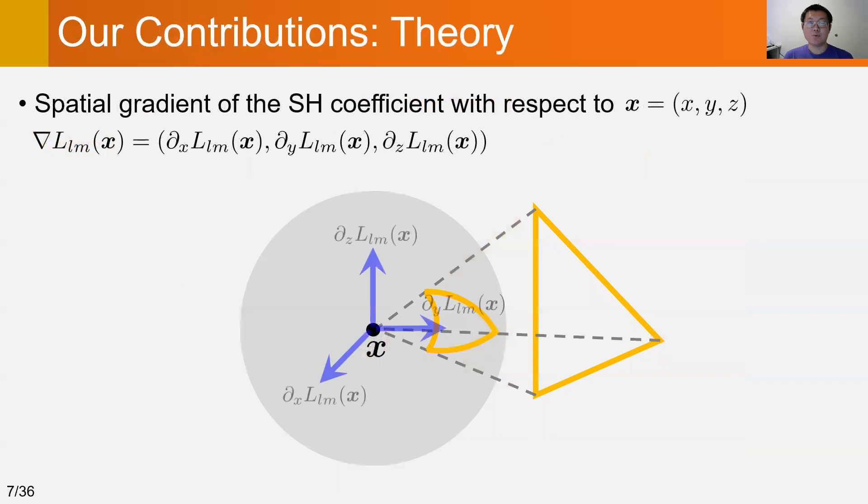We derive an analytic formula for spherical harmonic gradients, which are the first-order partial derivatives with respect to the spatial location of the shading point x.